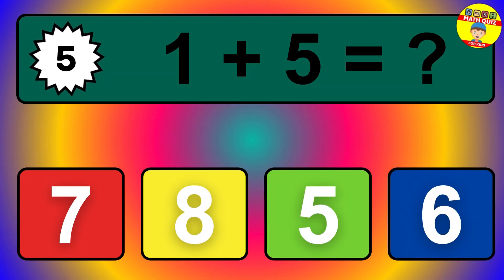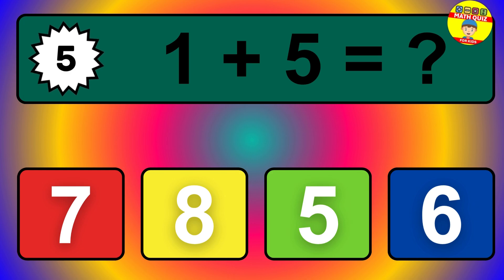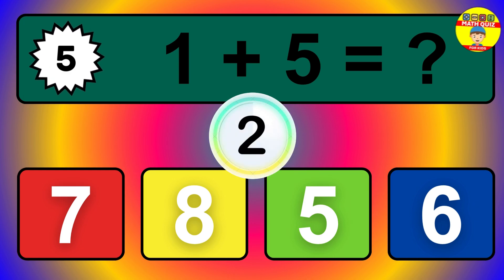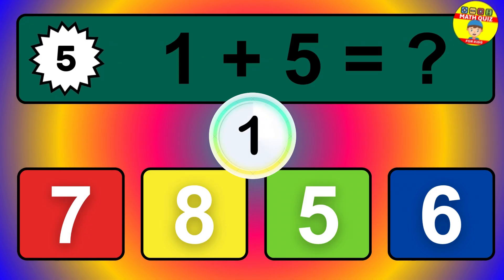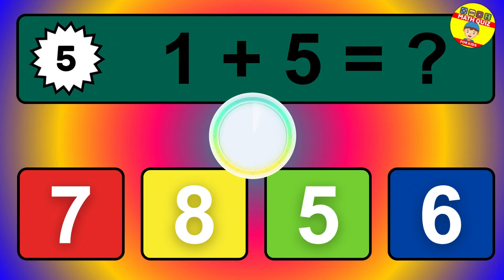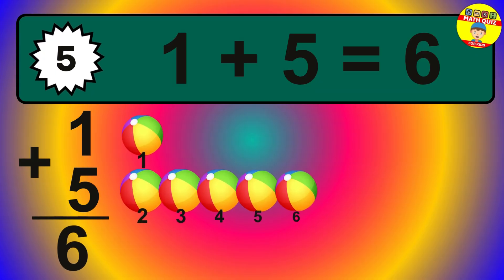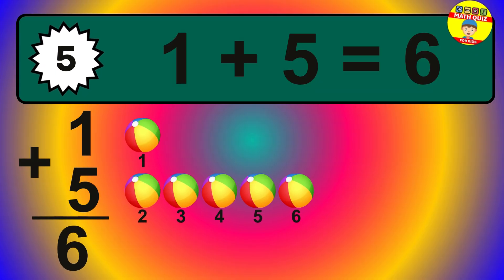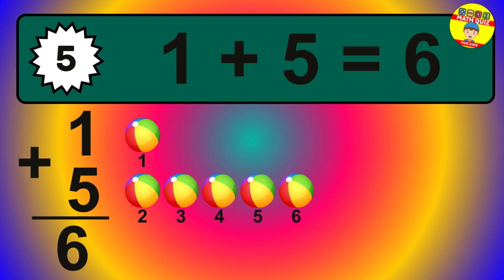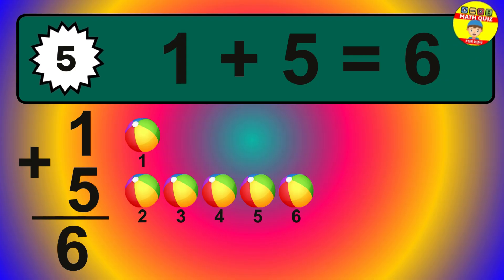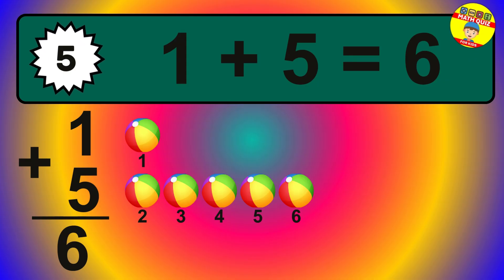Question 5. 1 plus 5 equals what? So the answer is 1 plus 5 is 6. Let's count it: 1, 2, 3, 4, 5, 6.